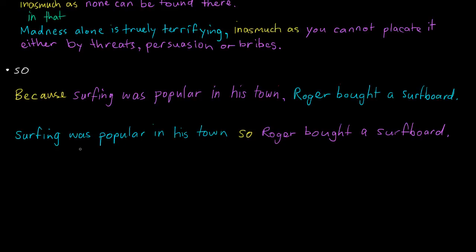Here, surfing was popular in his town was subordinate, and Roger bought a surfboard was the main clause. Here we actually have to swap this to the main clause, and this is subordinate. The reason that this happens is because here we have a reason clause, but here we actually have result - the function is result.